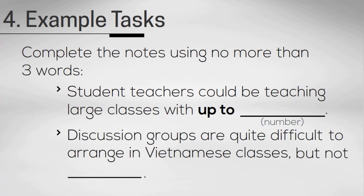How about the third one? Discussion groups are quite difficult to arrange in Vietnamese classes, but not... What kind of word are we looking for? It's unlikely to be a noun nor a verb. The first part of the sentence says quite difficult, but not something. Since difficult is an adjective, we could assume that we're looking for another adjective, but we can't be sure.